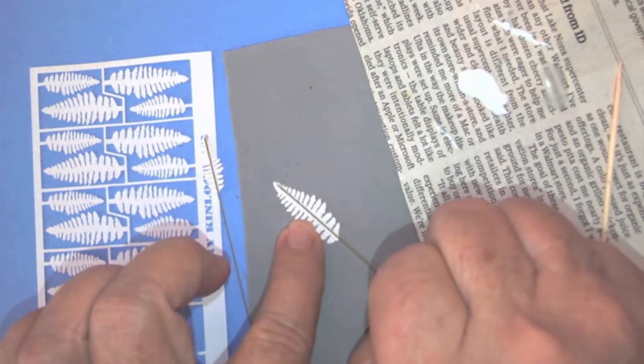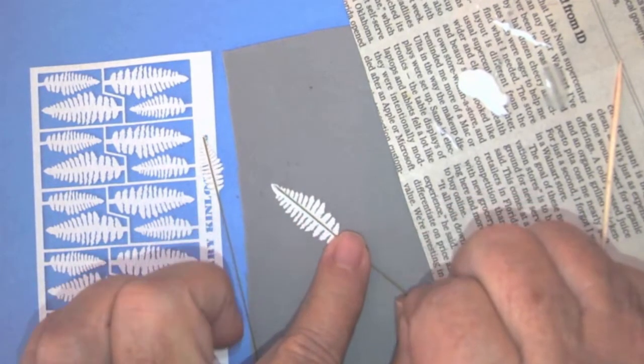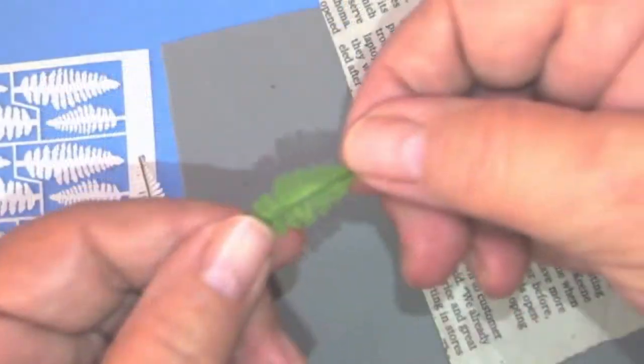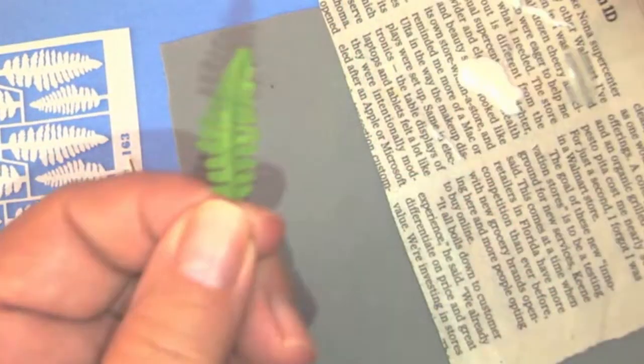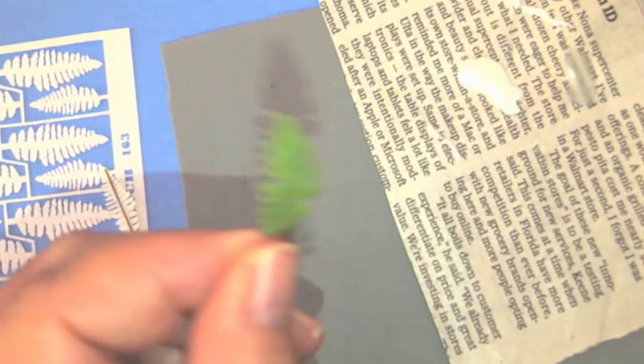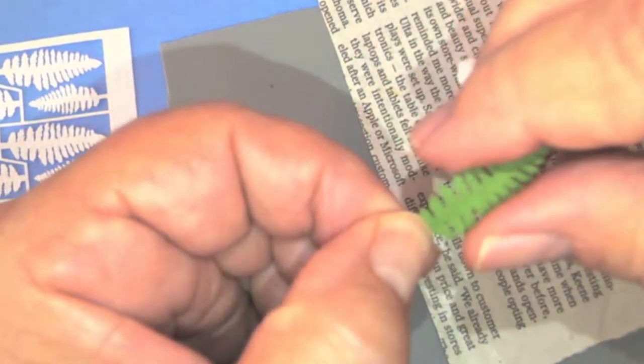Then I let that dry. I'm going to paint it. I usually use like a seminal green ceramic coat and a leaf green when I paint.